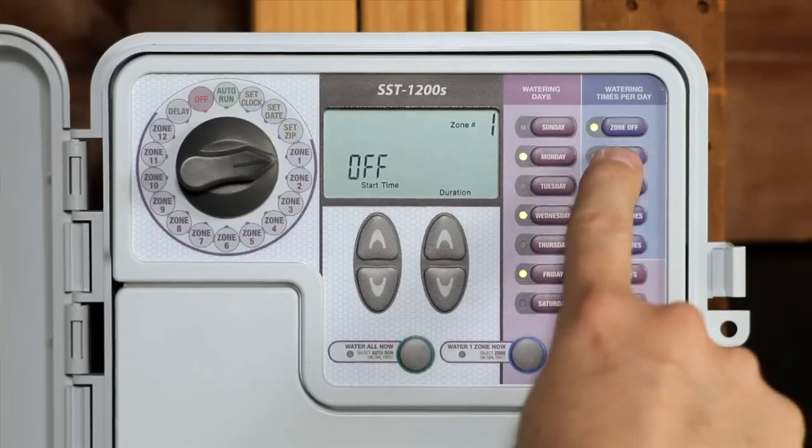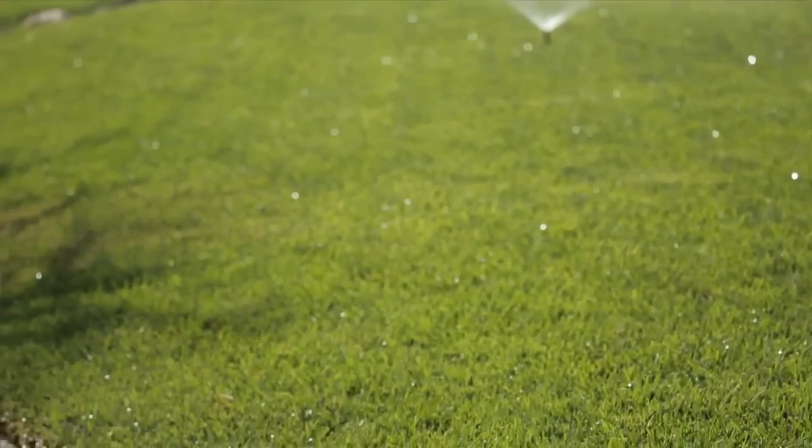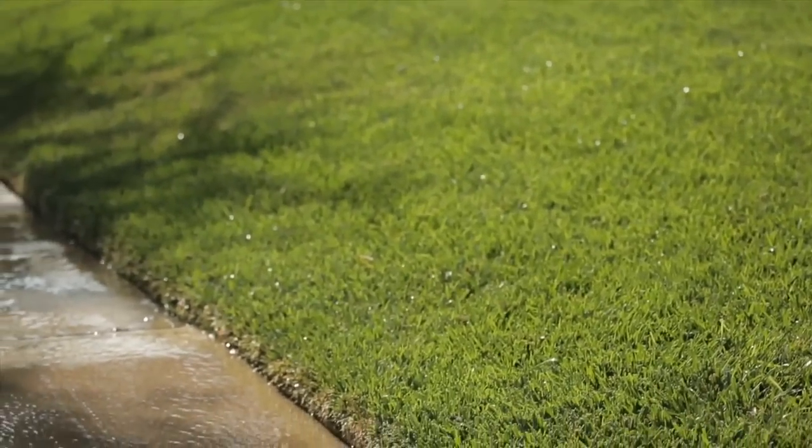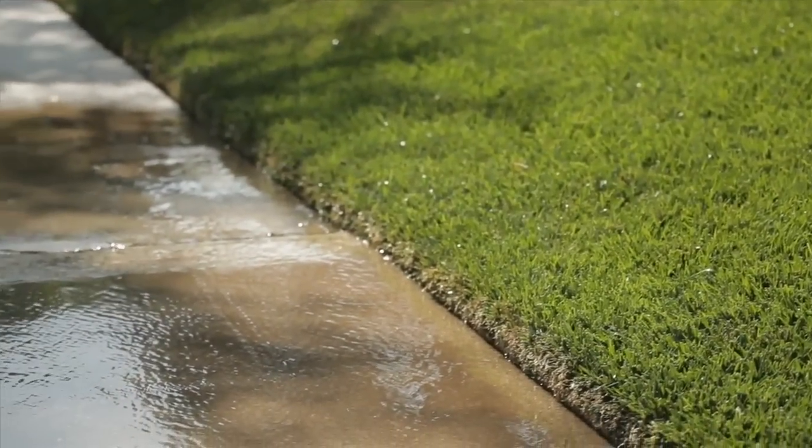Now let's set how many times a day this zone should water. Your controller automatically defaults to watering once a day. But if water puddles or runs into the street, you may want to water multiple times per day for fewer minutes each time.